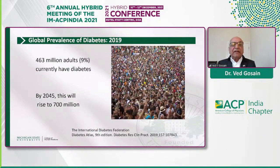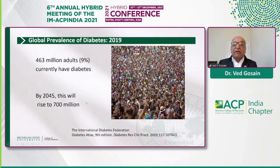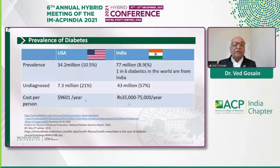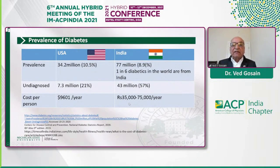With those diagnostic criteria, the current prevalence of diabetes worldwide is 463 million, expected to increase to 700 million by 2045. Here is the prevalence in the U.S. and India — somewhat surprisingly, one in six diabetics around the world is from India, with an estimated 77 million people having diabetes in India.